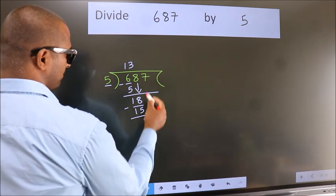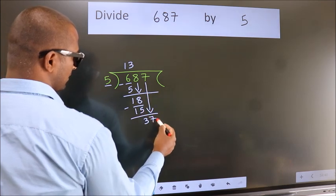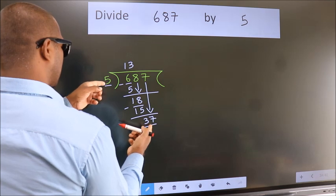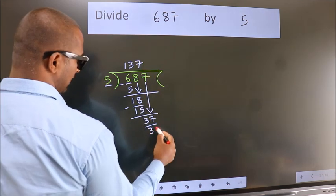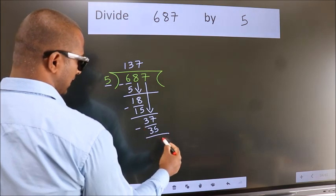After this, bring down the beside number. So 7 down. So 37. A number close to 37 in 5 table is 5 sevens 35. Now we subtract. We get 2.